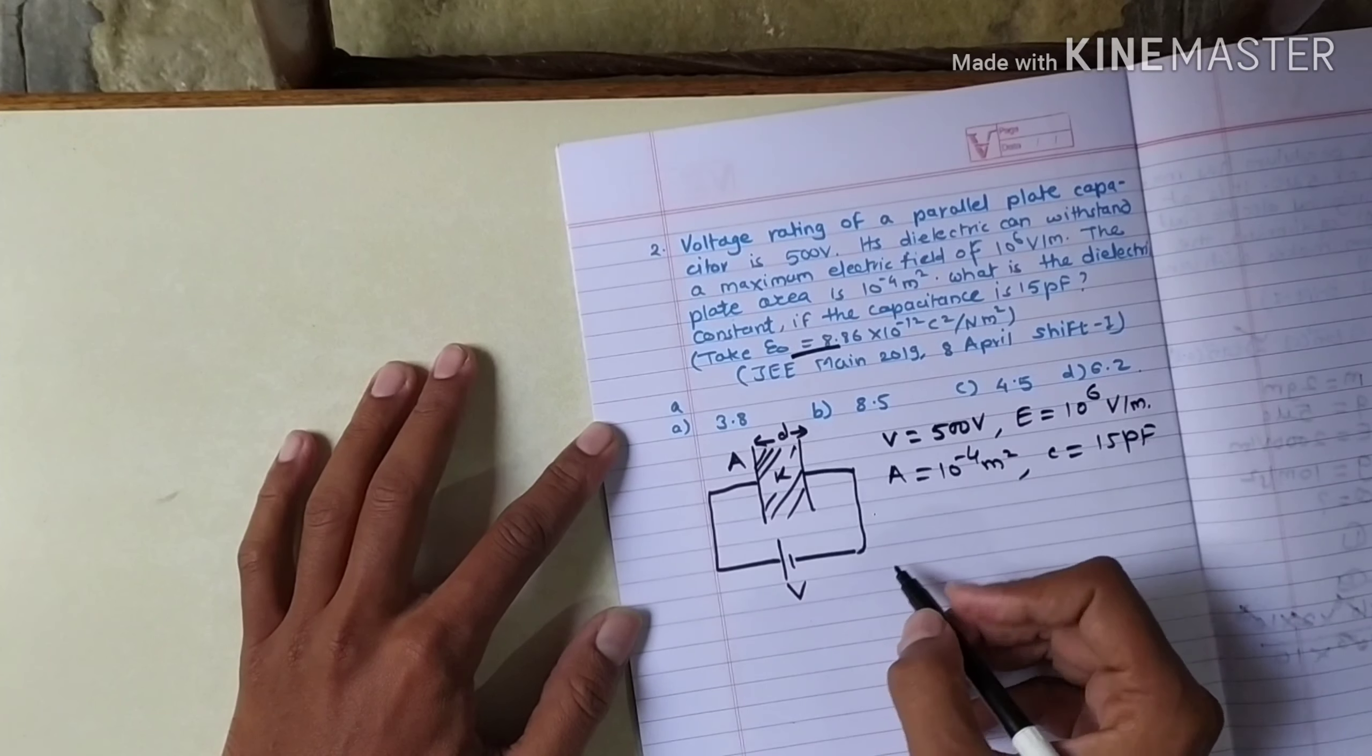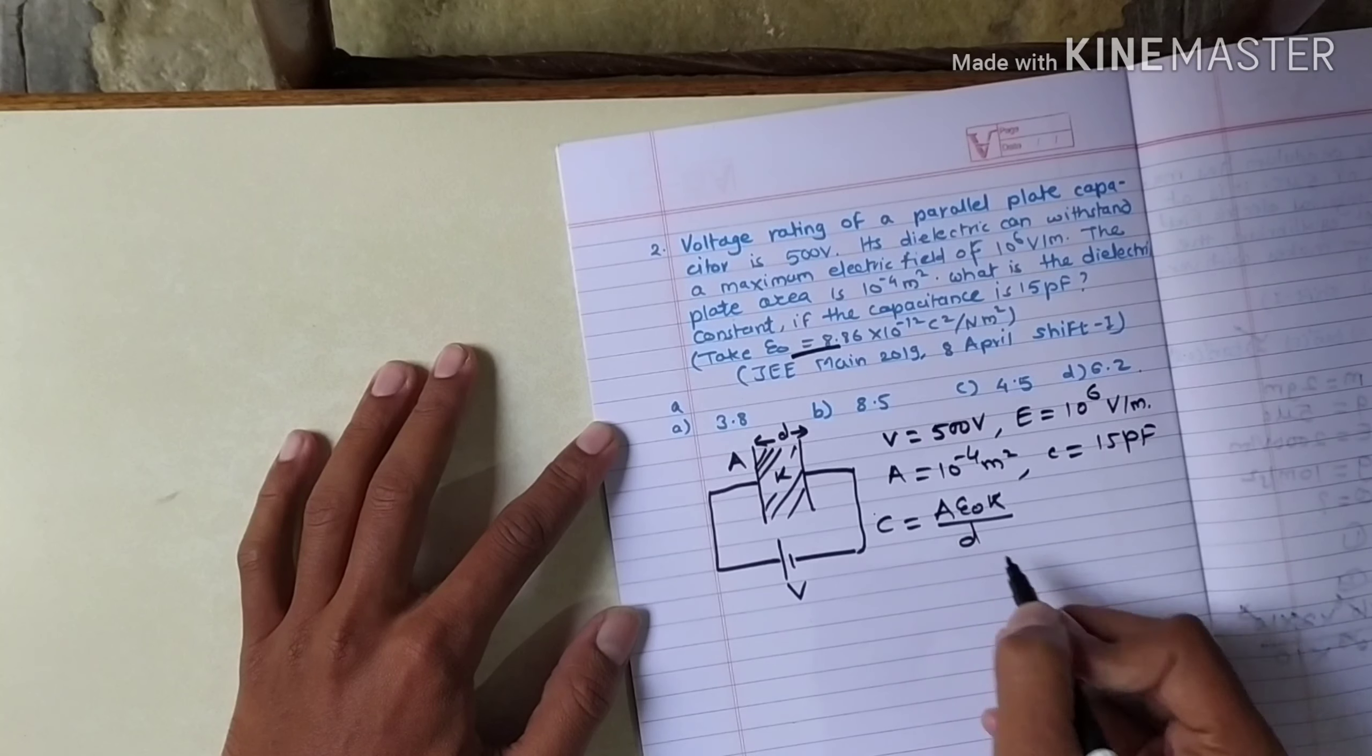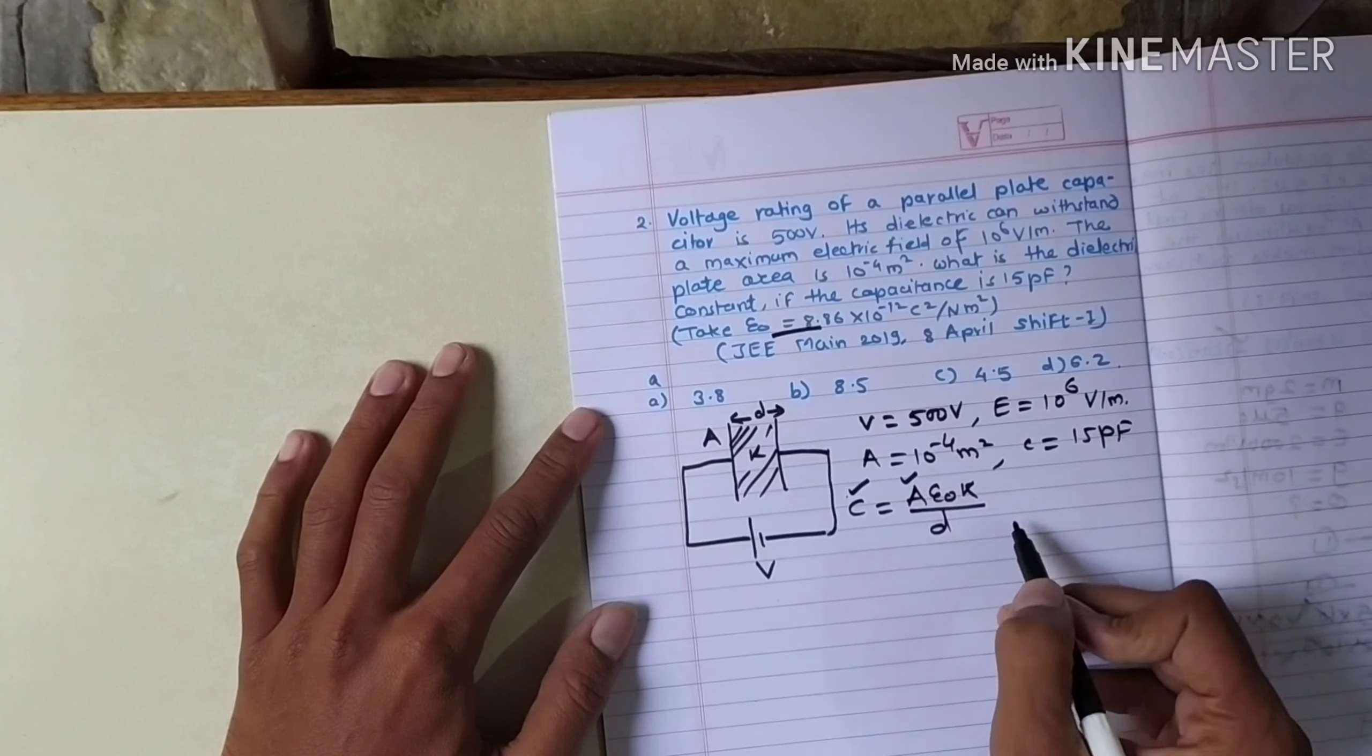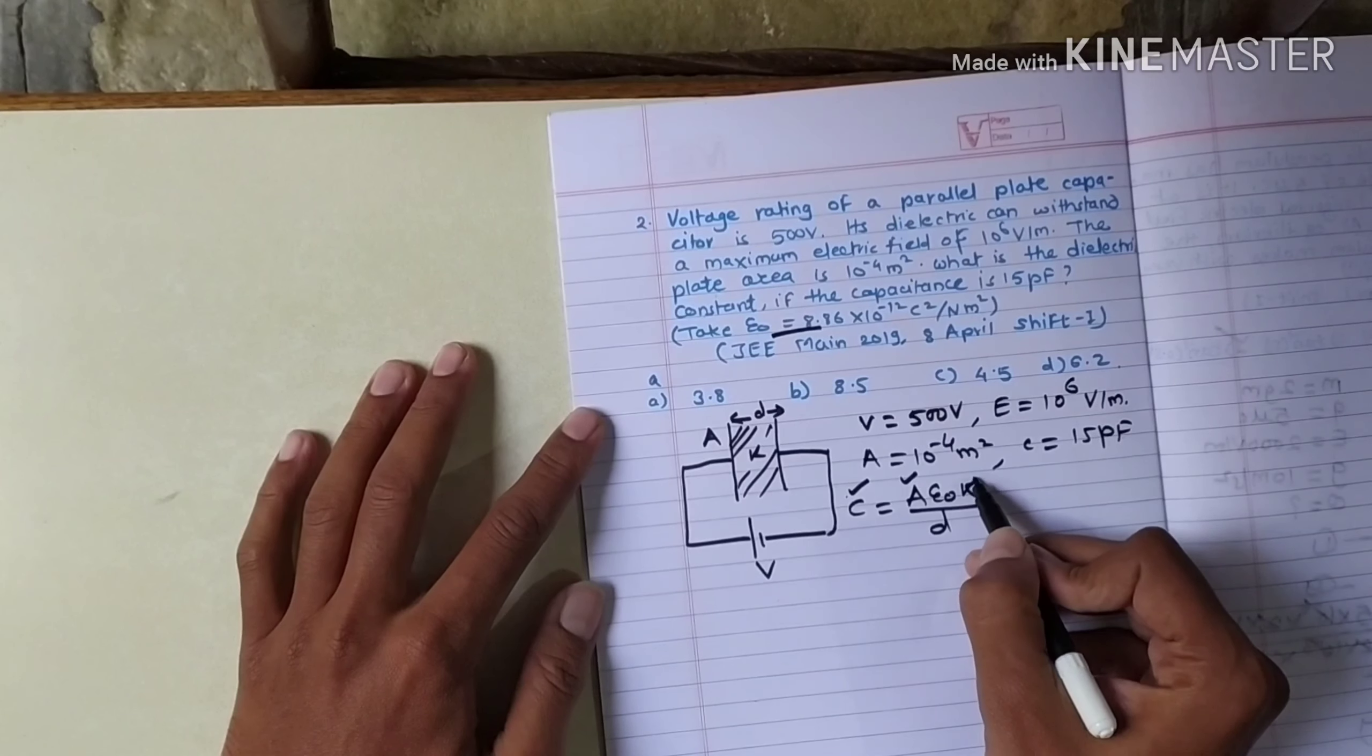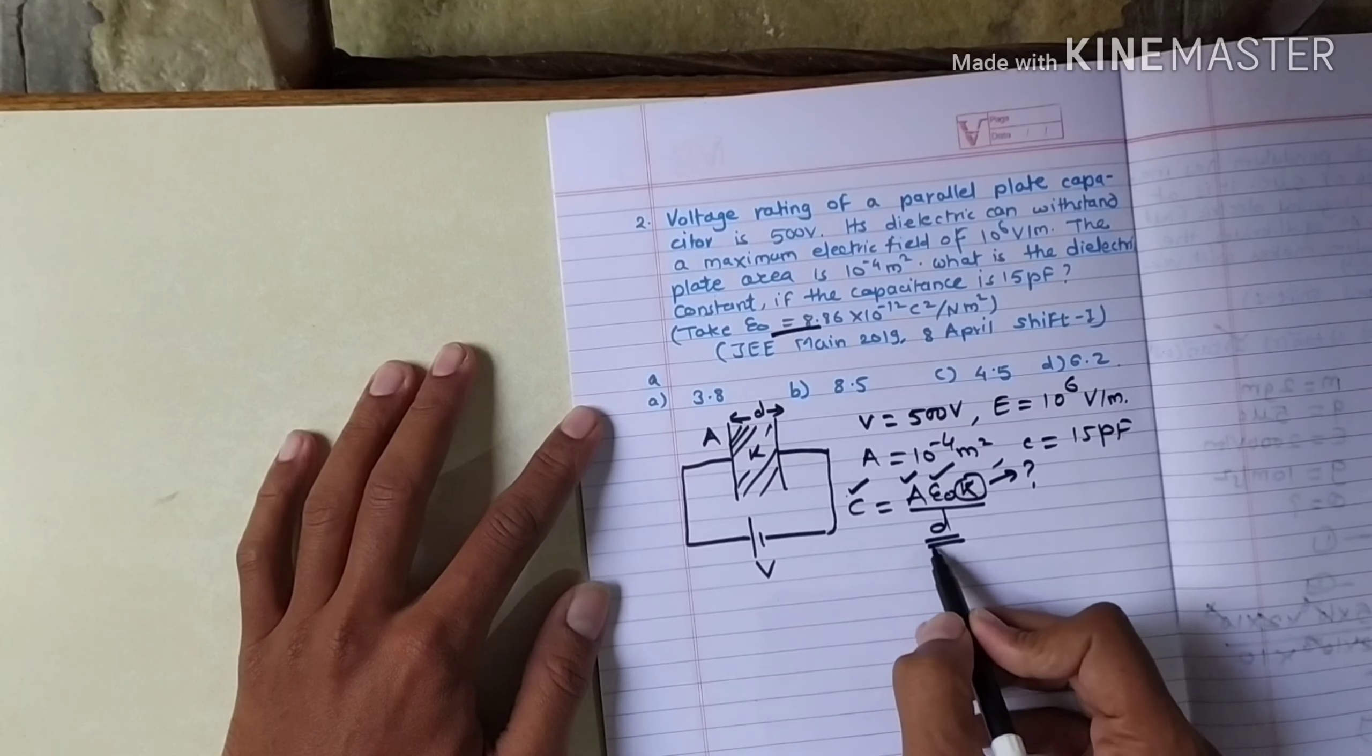You have to remember that the parallel plate capacitor capacity formula is C equals epsilon zero k A upon d. If we see this question, we have capacity given. Area of the plates is given. Dielectric constant we need to find out. Epsilon zero is given in the question. D is not given. Now how do we find d? We have two quantities to find out d.